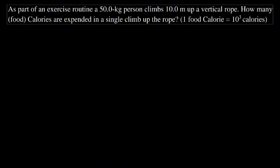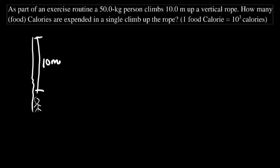For the next question: as part of an exercise routine, a 50 kilogram person climbs 10 meters up a vertical rope. How many food calories are expended in a single climb? One food calorie equals 10³ calories. We have a rope with the person climbing a height of 10 meters.